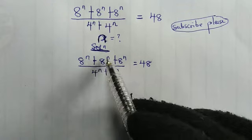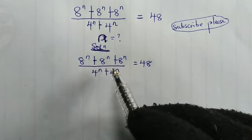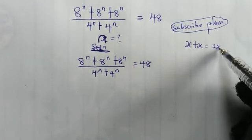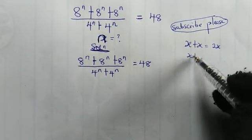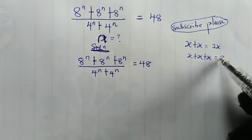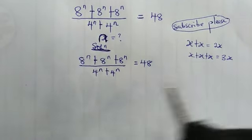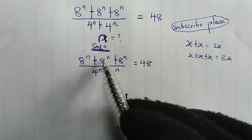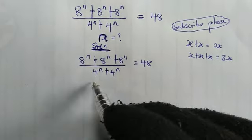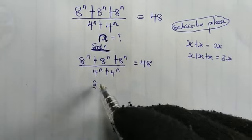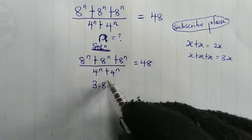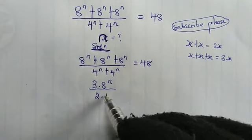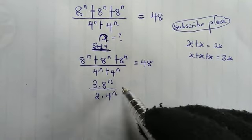Now, recalling that x plus x equals 2x, and x plus x plus x equals 3x. So here, 8^n plus 8^n plus 8^n becomes 3 times 8^n. And on the denominator, 4^n plus 4^n becomes 2 times 4^n. So we have 3 times 8^n all over 2 times 4^n, equal to 48.